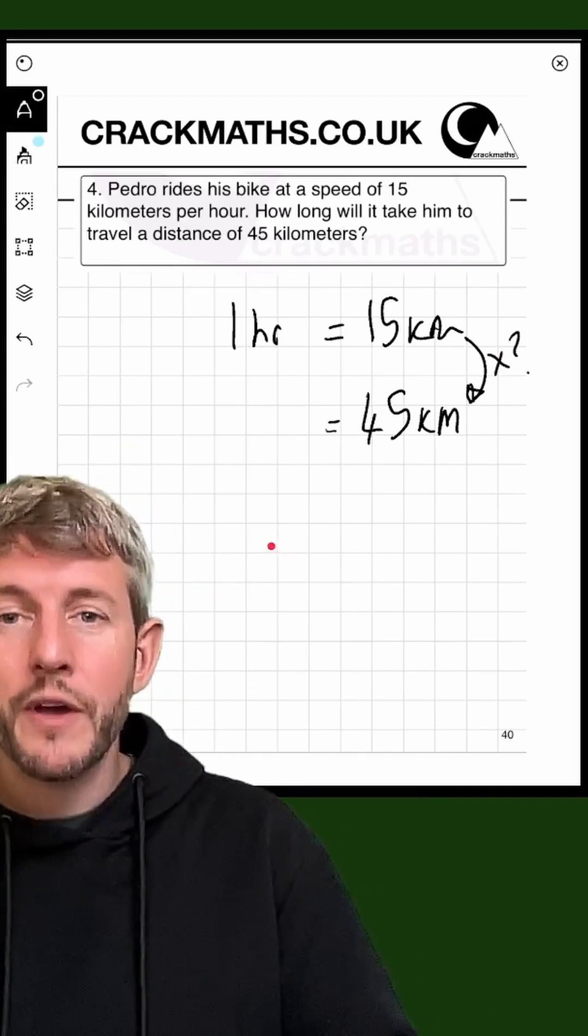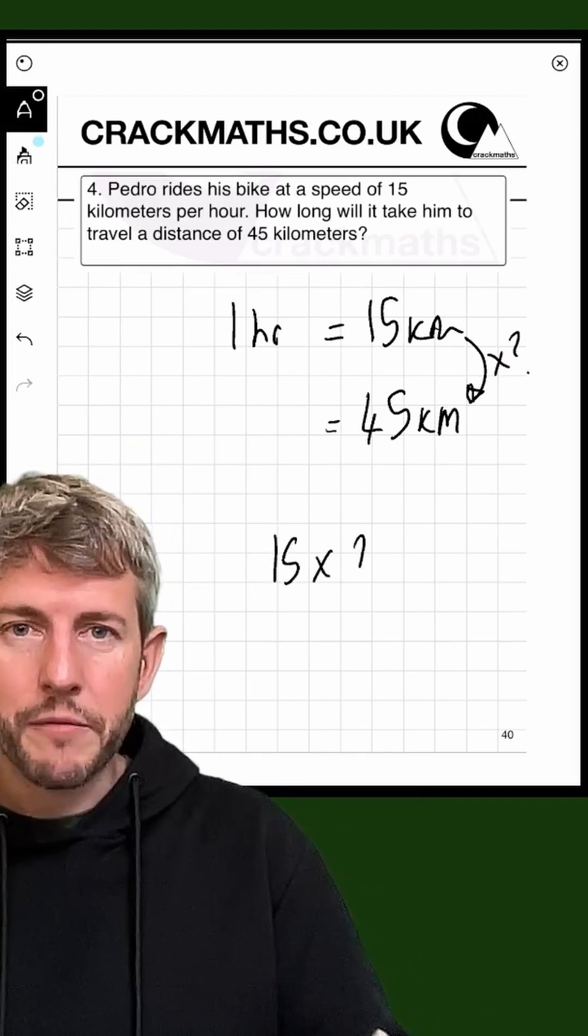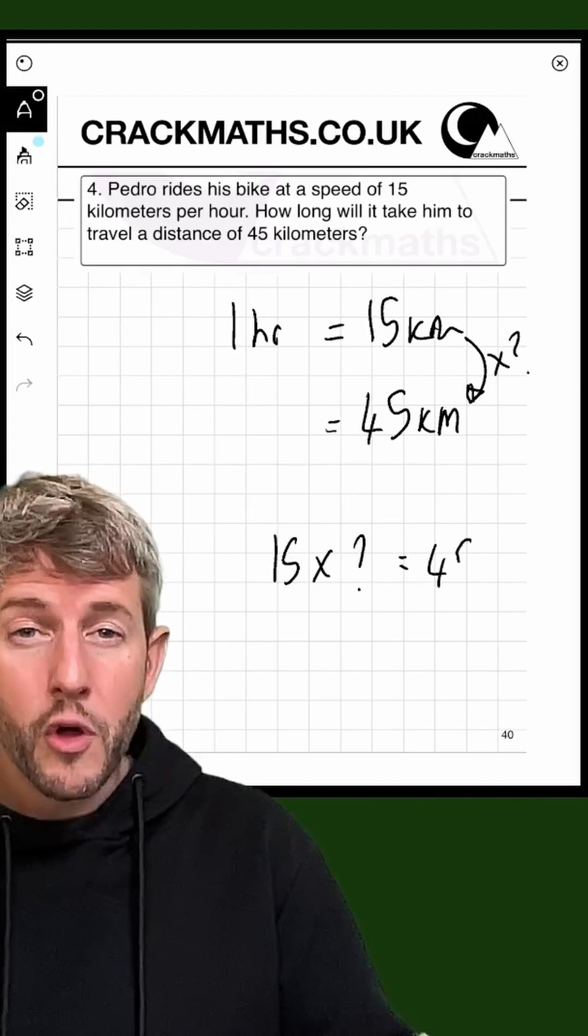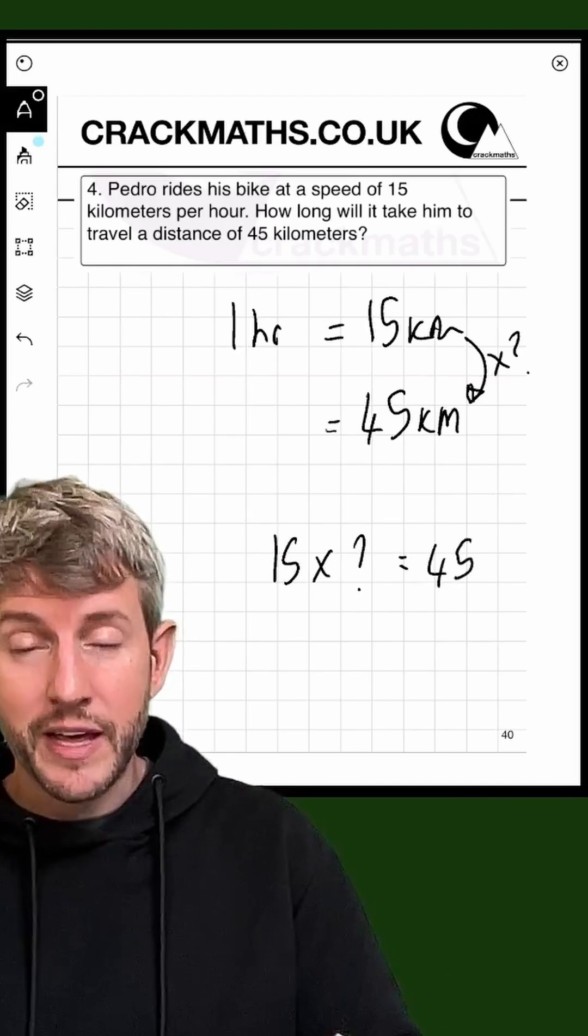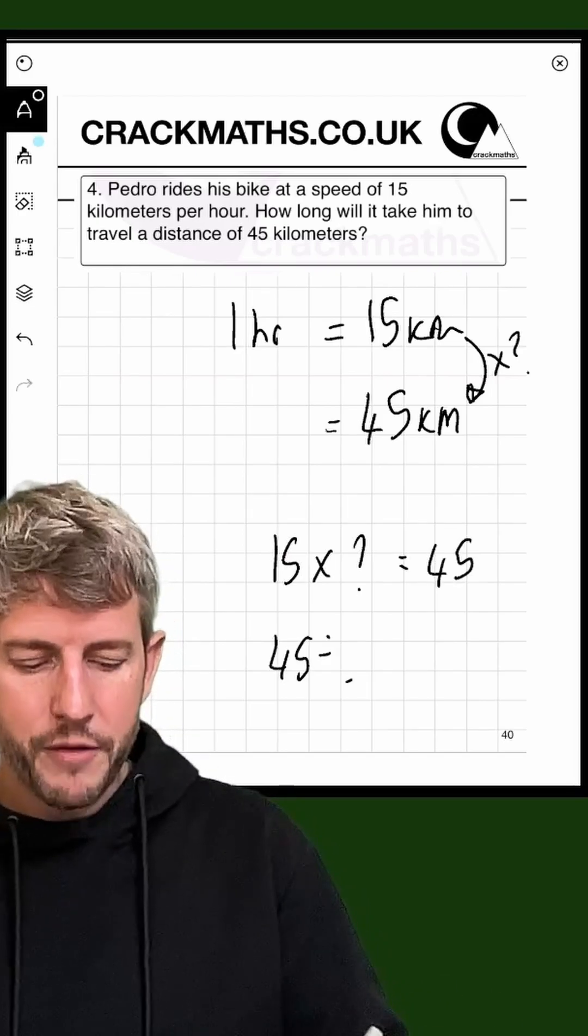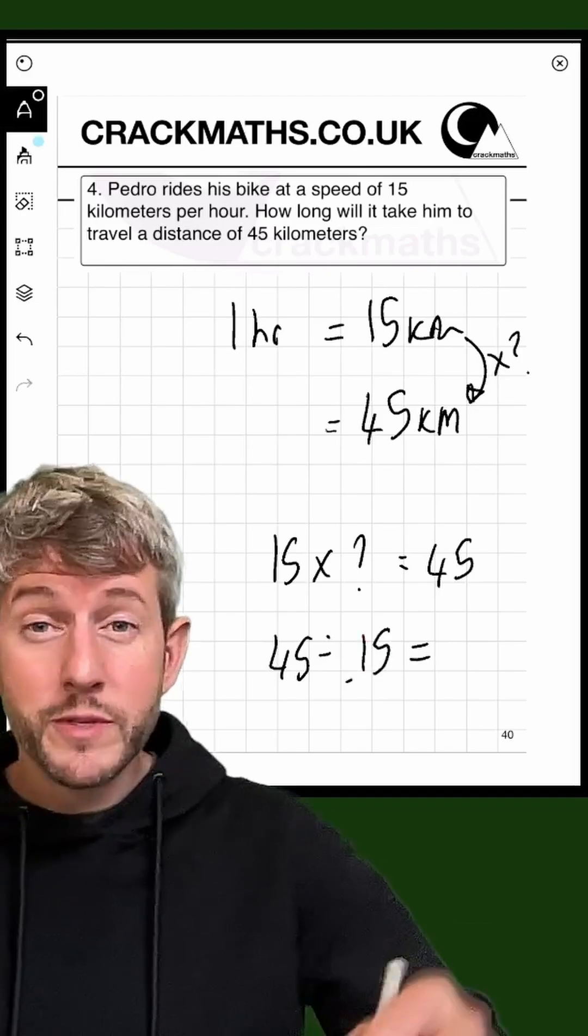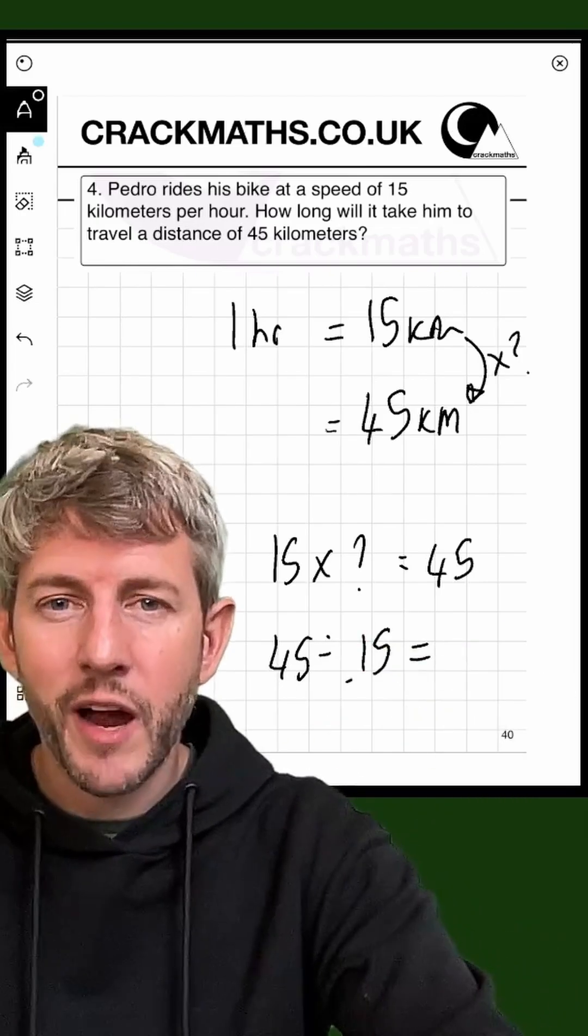So if we know that 15 times something equals 45, well we can reverse this calculation and do 45 divided by 15, and this will tell us how many lots of 15 are in 45.